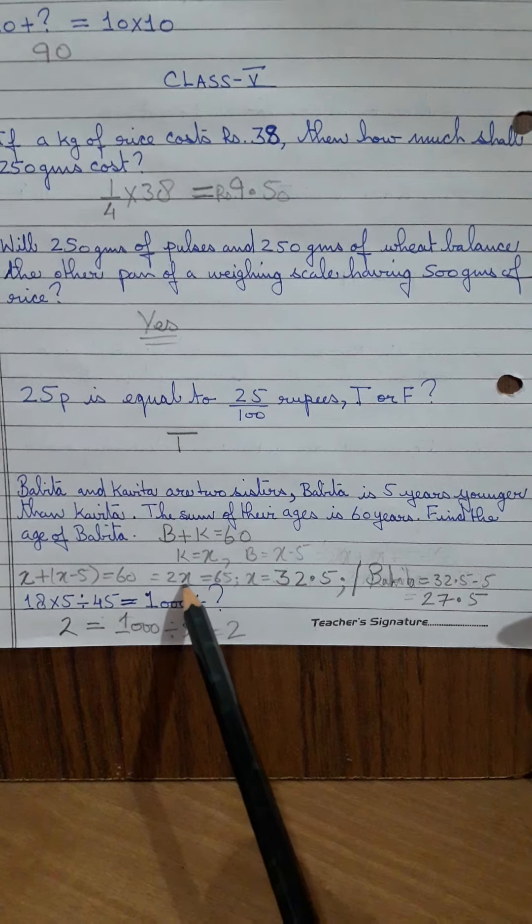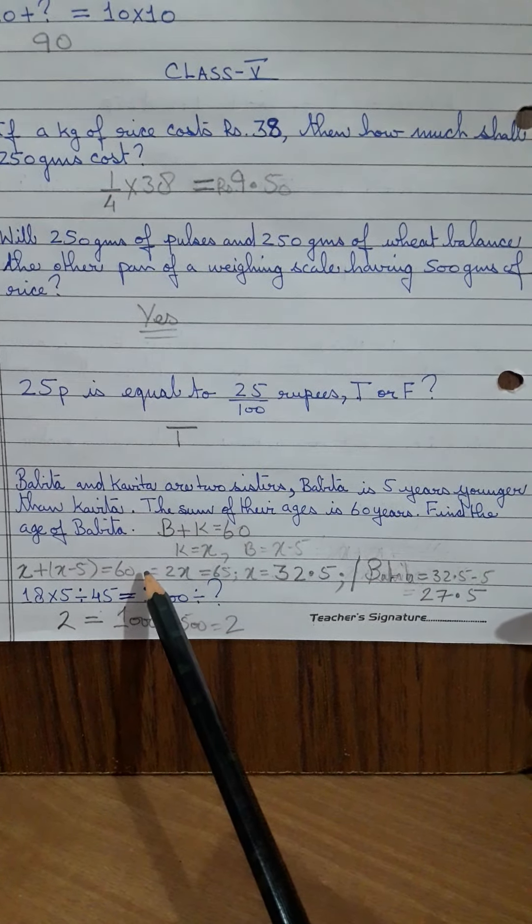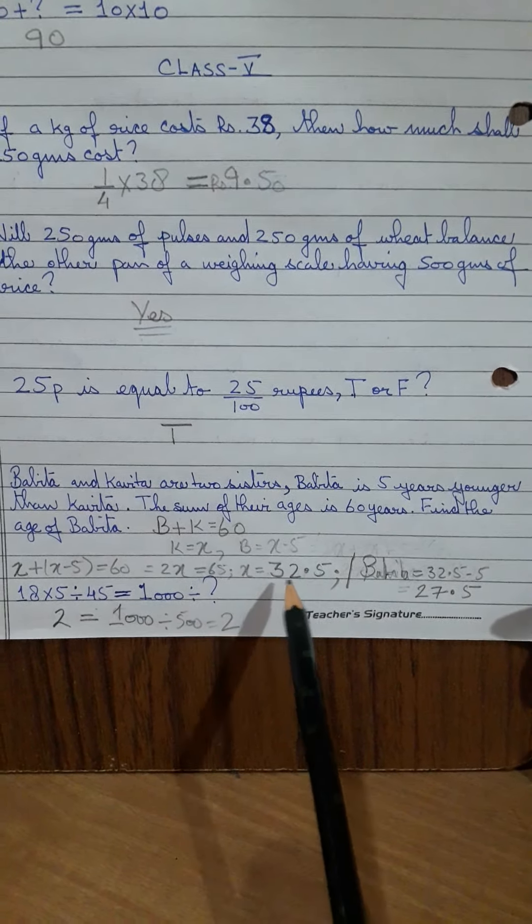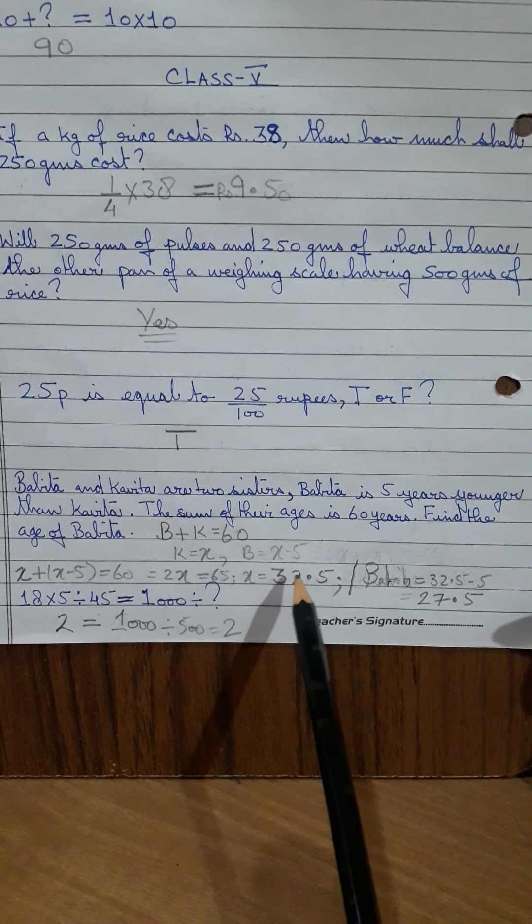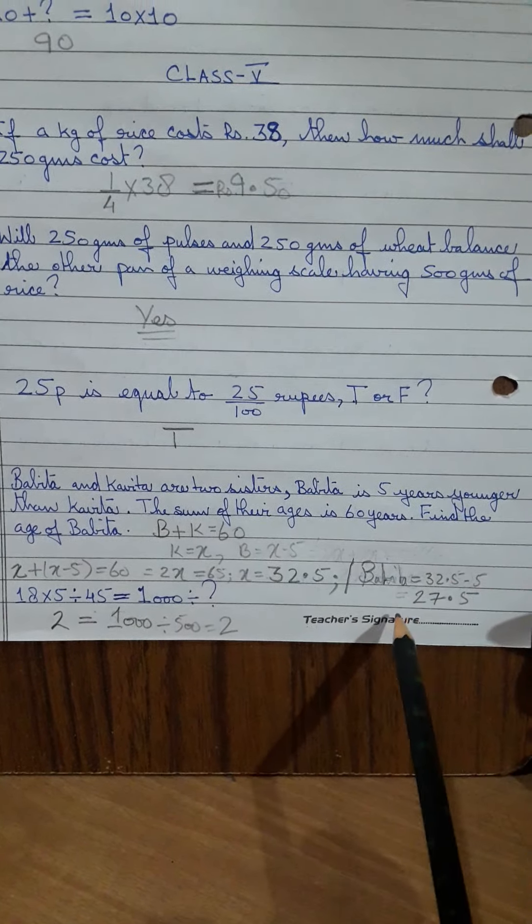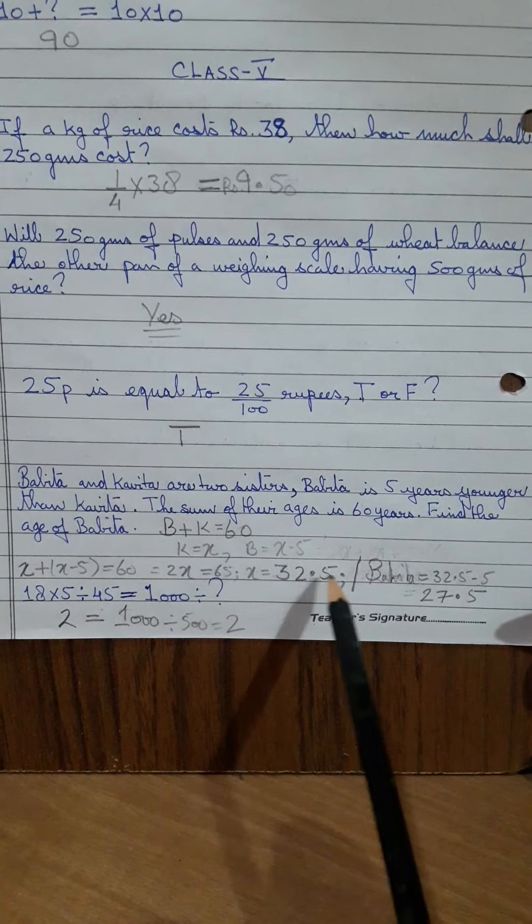So what will you get? 2X is equal to 65 because you take a 5 here. So X is 32.5. Kavita is 32.5. Just subtract 5 from there and you will get Babita's age. 27.5 is your answer.